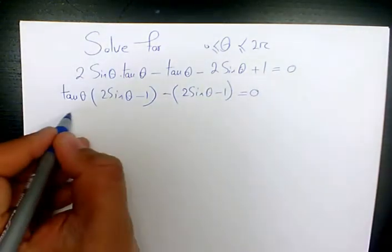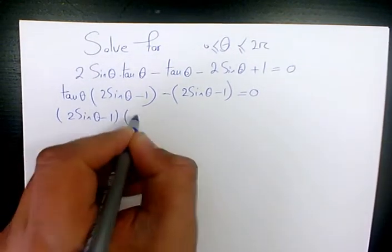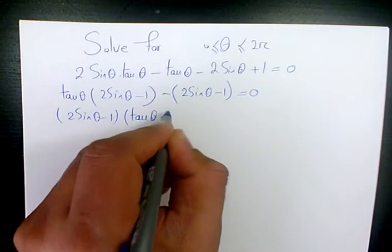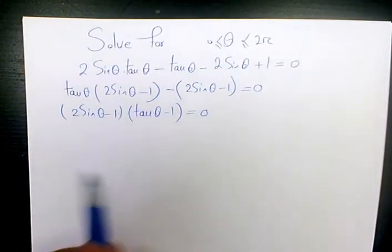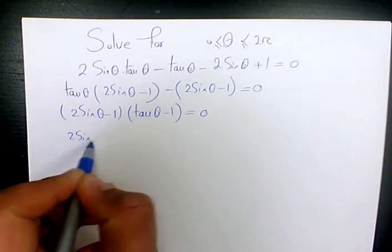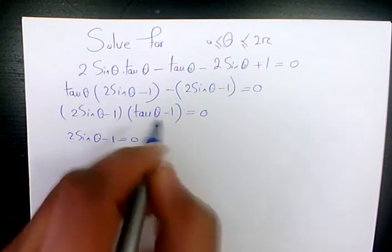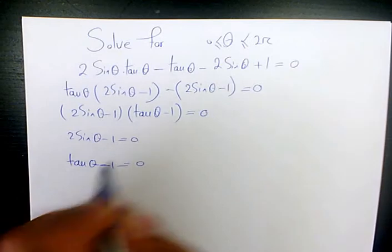Then I factor out 2sin(θ) - 1, giving (2sin(θ) - 1)(tan(θ) - 1) = 0. Now I have this equation in factored form. We have two cases: one case is 2sin(θ) - 1 = 0, and the other one is tan(θ) - 1 = 0.